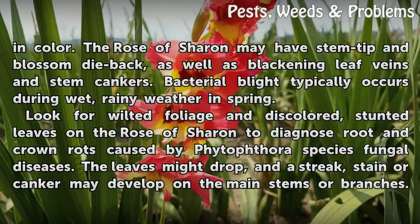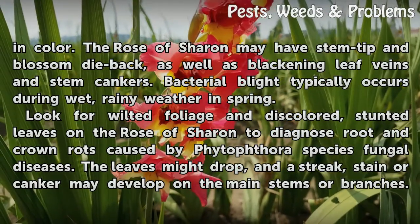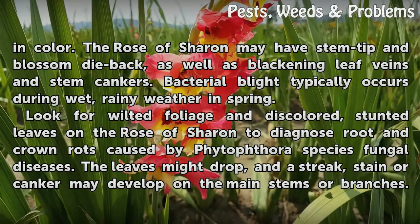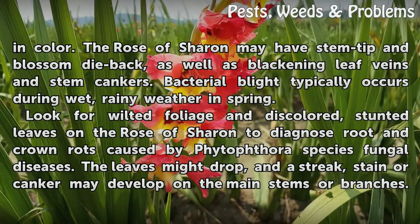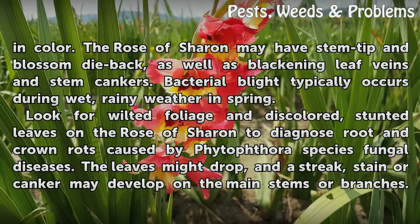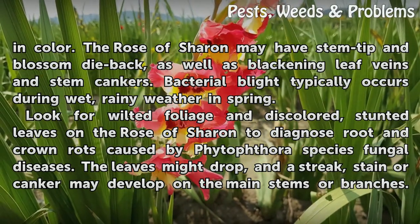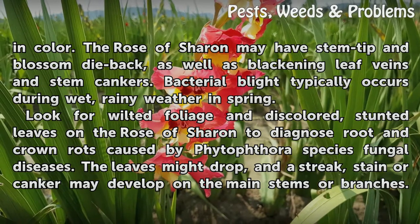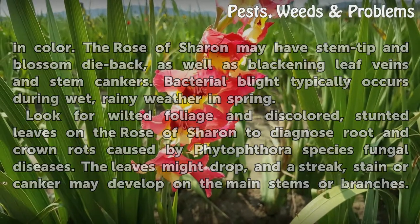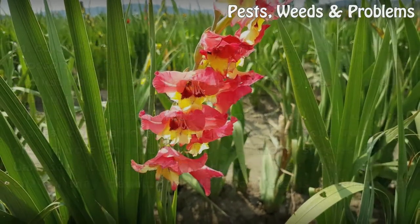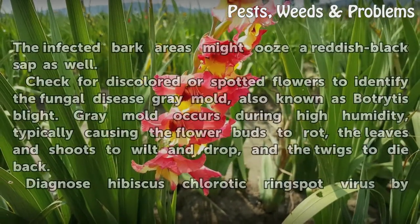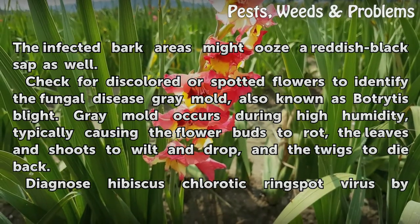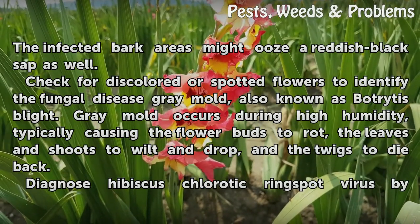Look for wilted foliage and discolored, stunted leaves on the Rose of Sharon to diagnose root and crown rots caused by Phytophthora species fungal diseases. The leaves might drop, and a streak, stain or canker may develop on the main stems or branches. The infected bark areas might ooze a reddish-black sap as well.